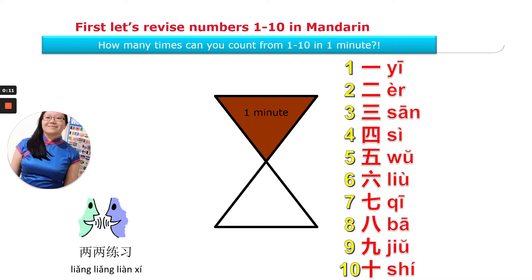So first, you are going to have a quick go at counting from 1 to 10 in Mandarin. I'm going to say it once, and then you can have a go. 一, 二, 三, 四, 五, 六, 七, 八, 九, 十. Now your turn.